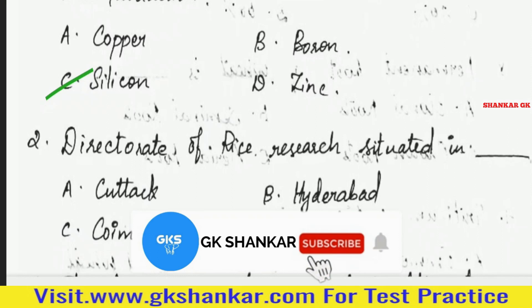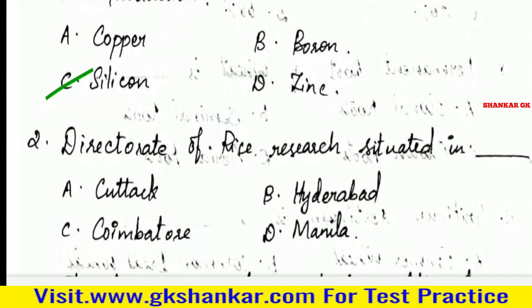Second question: Directorate of Rice Research is situated in — A. Kadak, B. Hyderabad, C. Coimbatore, D. Manila. Answer: B. Hyderabad.